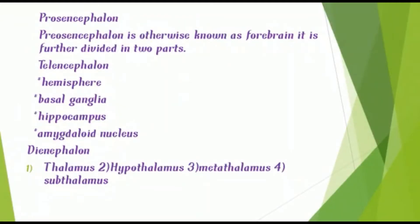Prosencephalon is otherwise known as the forebrain. It is divided into two parts: telencephalon and diencephalon. In telencephalon, we see the right and left hemispheres, basal ganglia, and hippocampus. In diencephalon, we see thalamus, hypothalamus, metathalamus, and subthalamus.